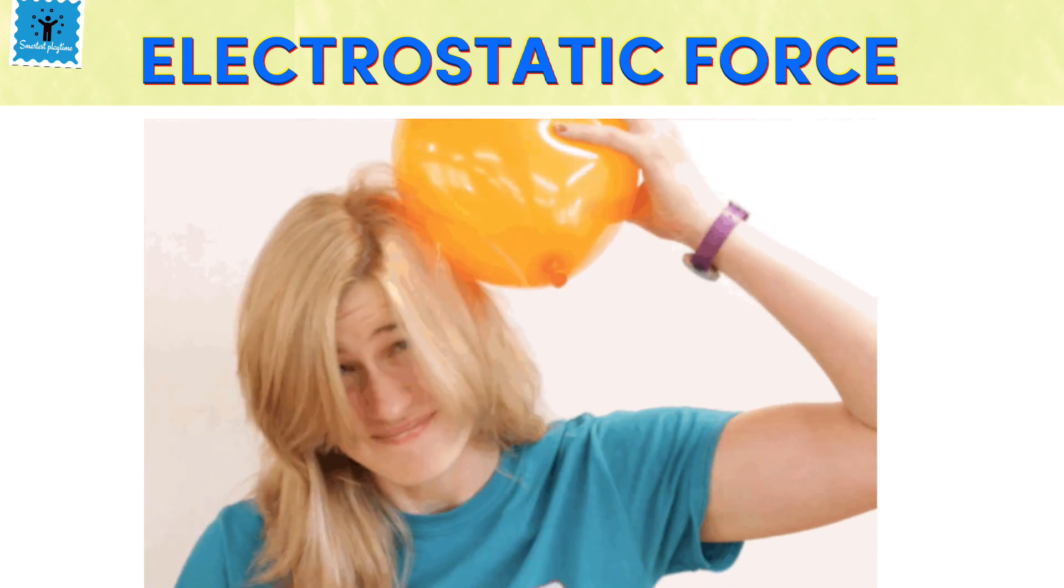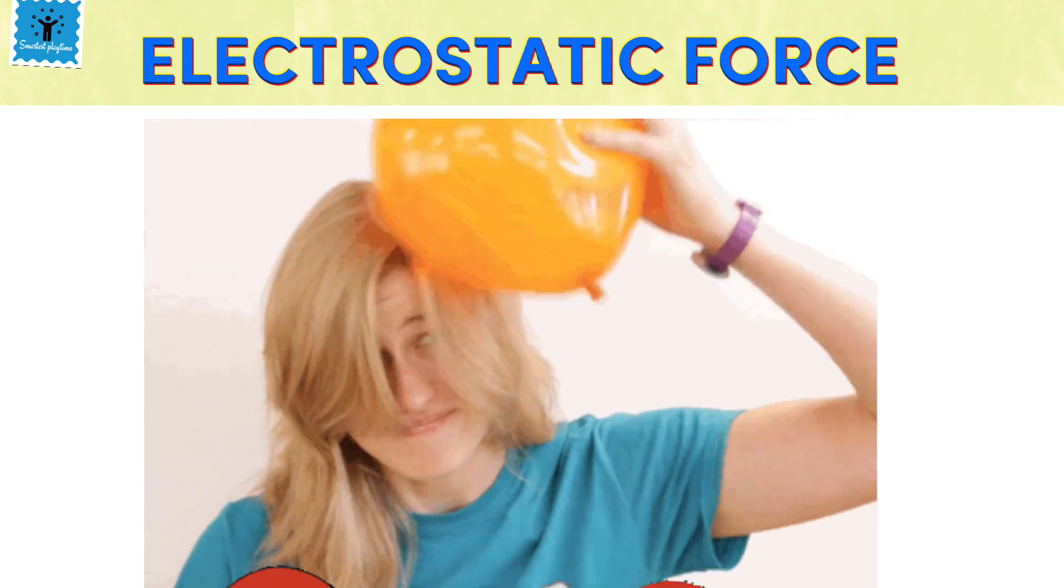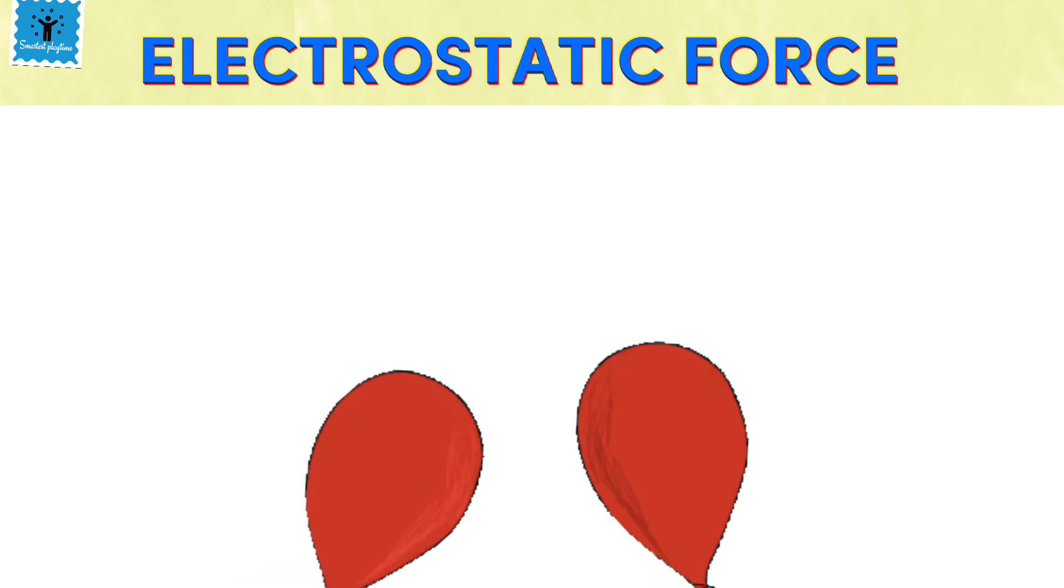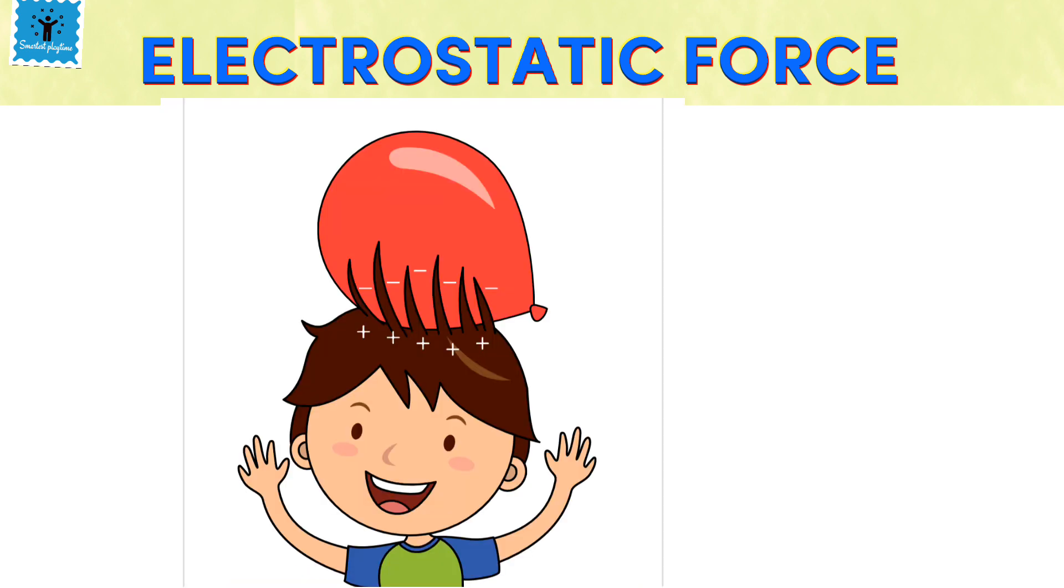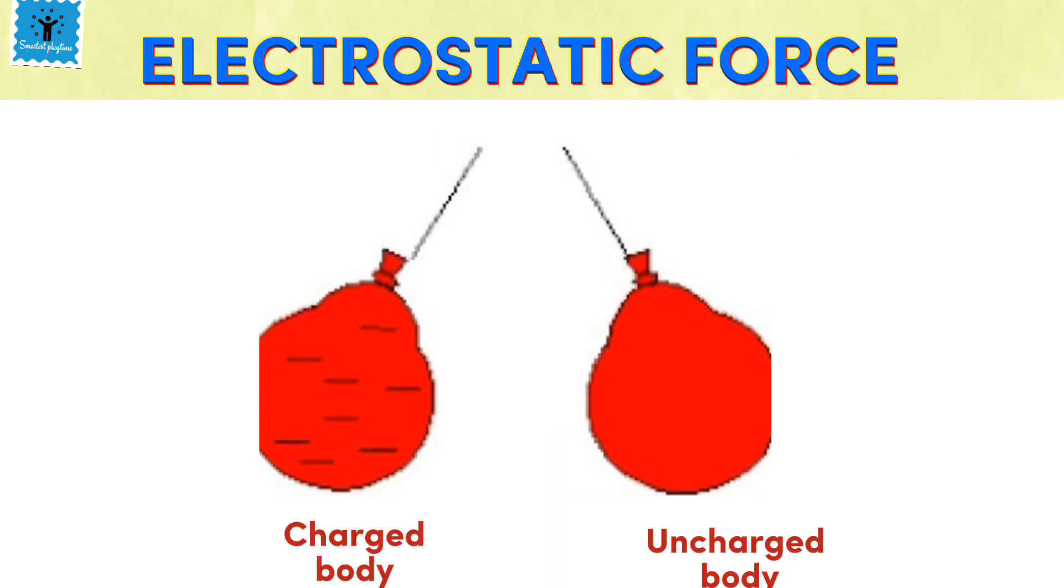When a balloon is rubbed with human hair and brought close to another balloon, both start to stick together. When we rub the balloon with human hair, it acquires electrostatic charge. Such a balloon is an example of a charged body. When we bring it closer to another balloon, which is an uncharged body, they begin to attract each other.